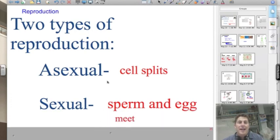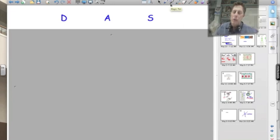Let's first take a look at asexual reproduction where the cell simply splits. To help you understand asexual reproduction, we're going to simplify things. Just remember three things: Duplication, alignment, and separation. D-A-S.